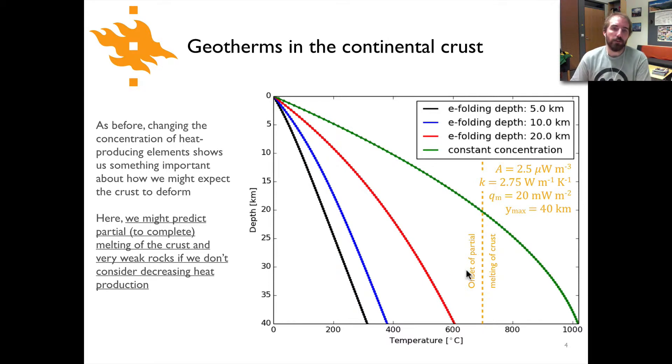In the other cases we're assuming an exponential decrease in the concentration of heat producing elements. In the red line, if you go to a depth of 20 kilometers, the concentration would be 2.5 microwatts per cubic meter divided by e, the natural log exponent. The same thing applies for the blue line and black line where we have just shallower e-folding depths.